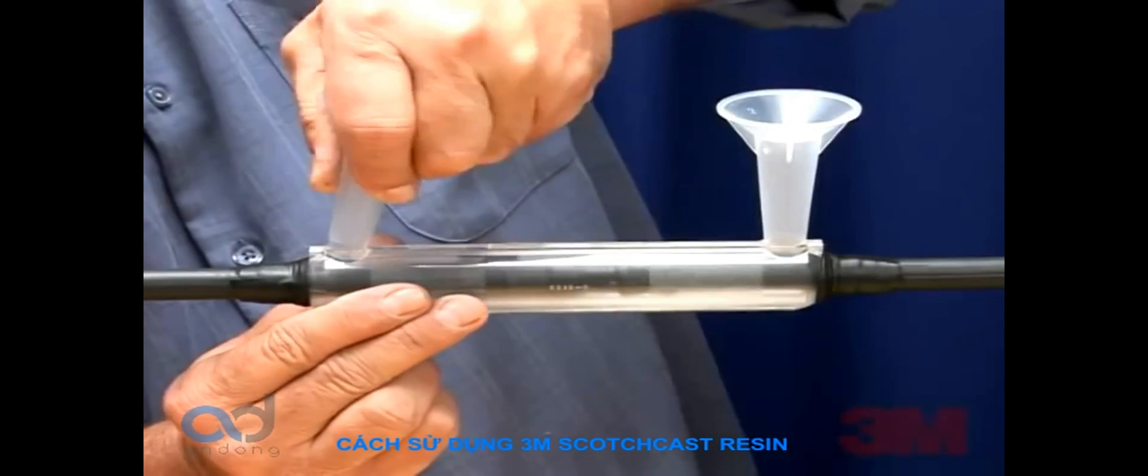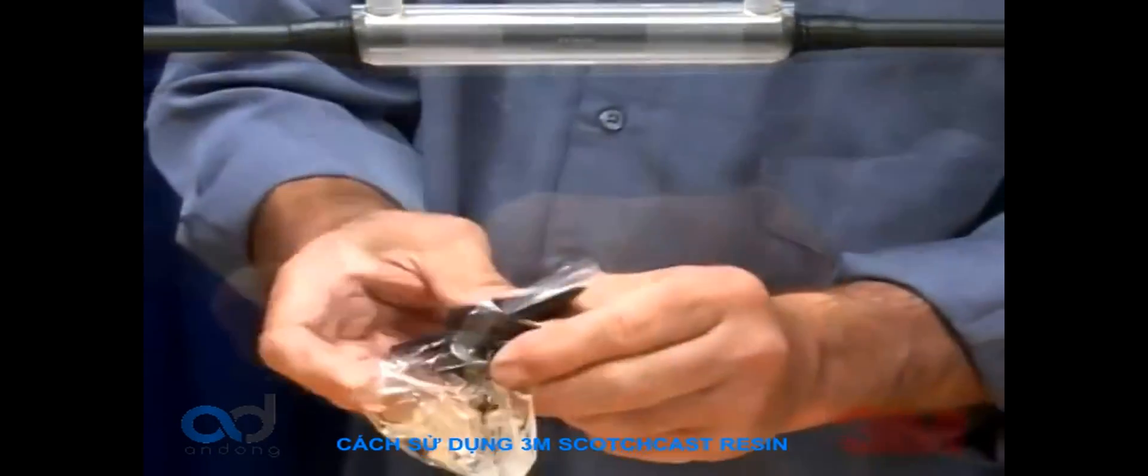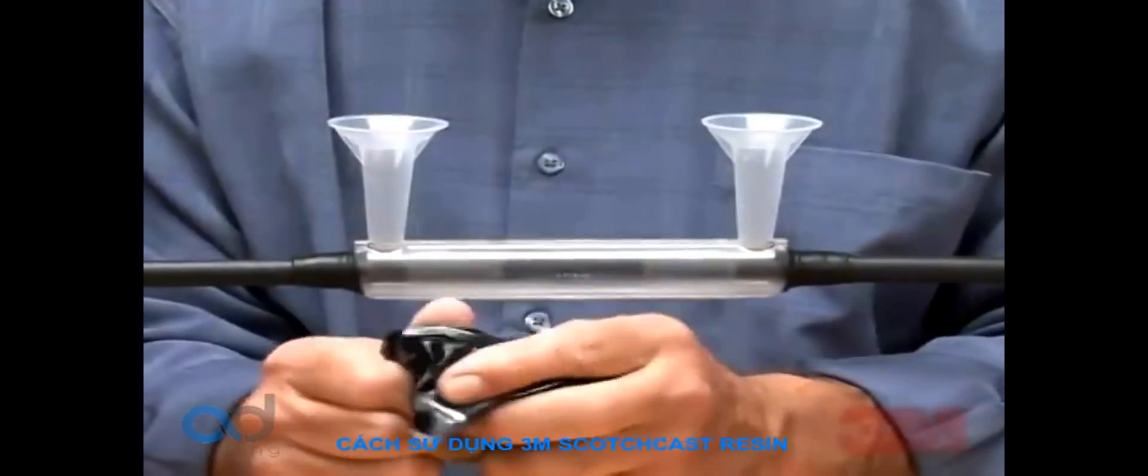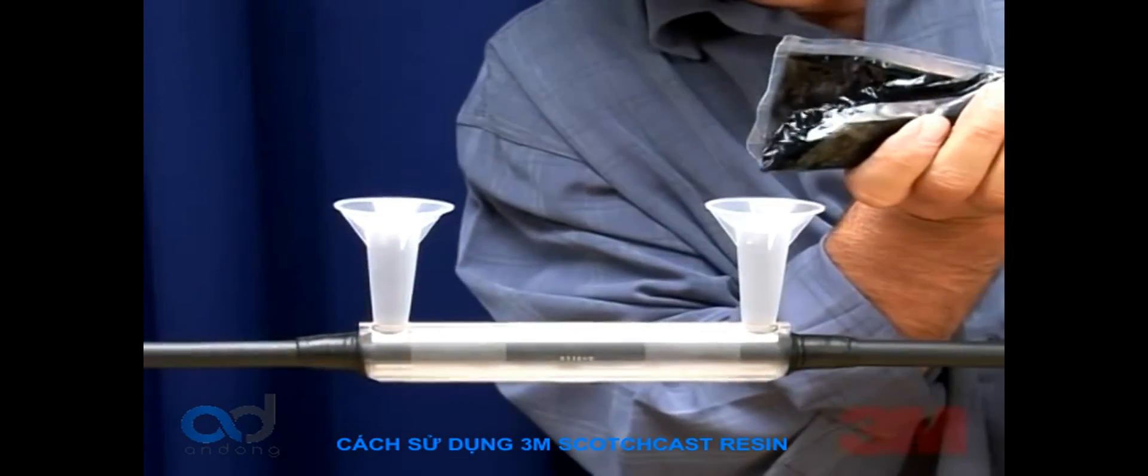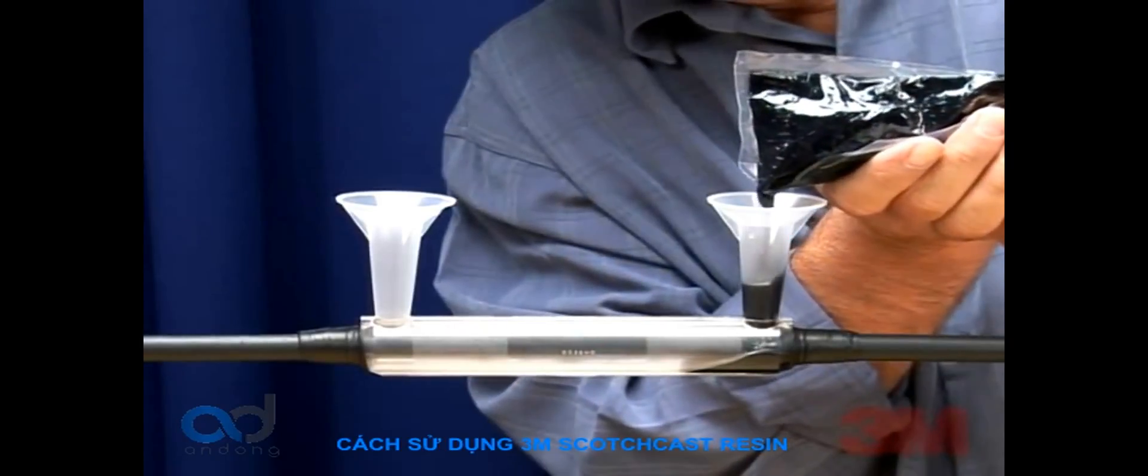Step 4: Put the pouring spouts in the holes. Make sure the splice position is level. Mix the resin thoroughly according to the instructions on the resin package. Pour the resin immediately after mixing. Fill only through one spout until both spouts are completely filled.